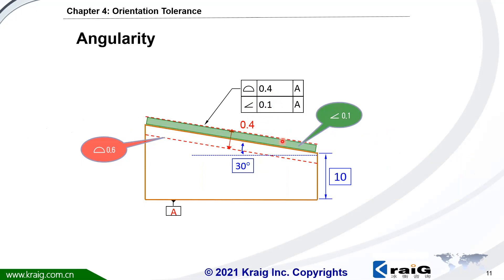The green one is the tolerance zone of angularity. This green tolerance zone should always be within the tolerance zone of profile.